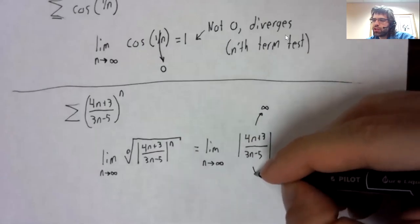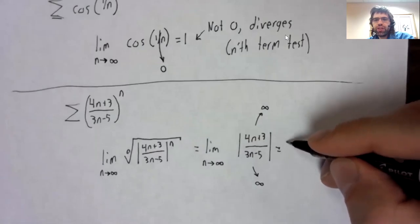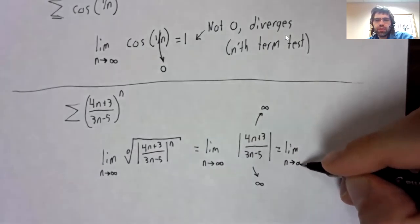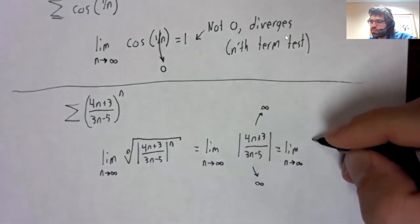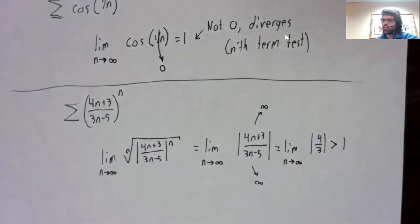This limit is an indeterminate form. The numerator and the denominator are both going to infinity. So we'll take the derivative.